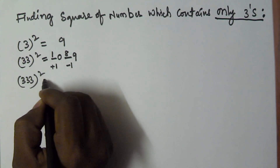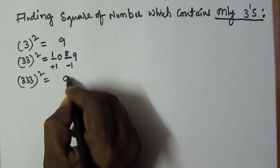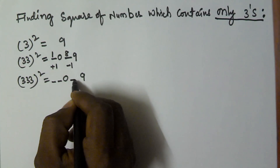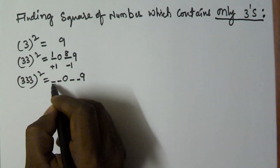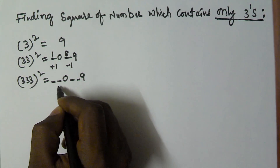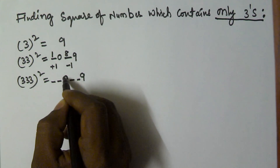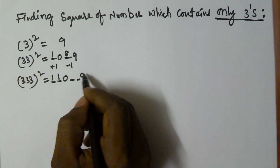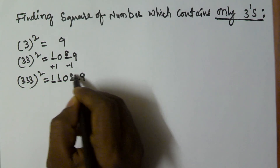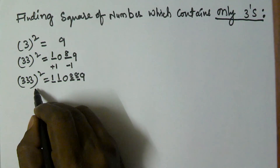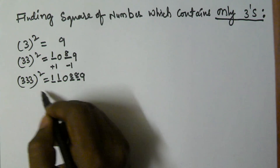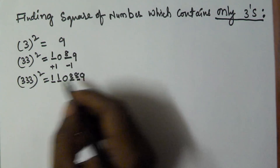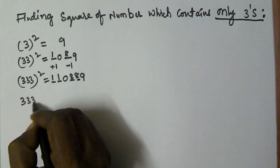3 squared is 09, and 333 has 3 digits, so we take 2 spaces on each side. We put the plus 1 values — that is 1 and 1 — on the left side, and the minus 1 values — that is 8 and 8 — on the right side. So 333 squared is 110889.